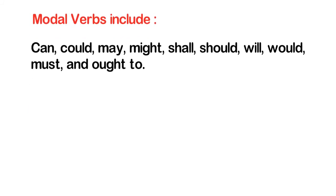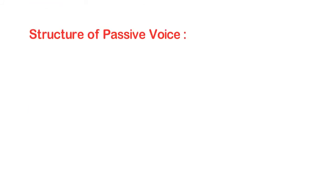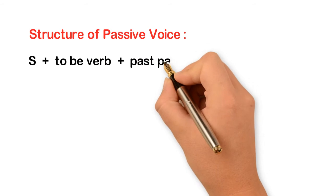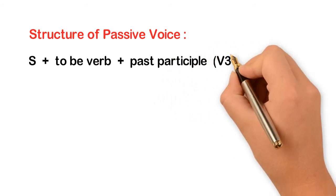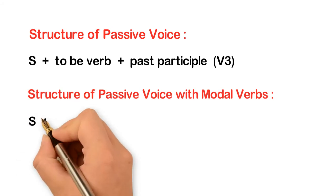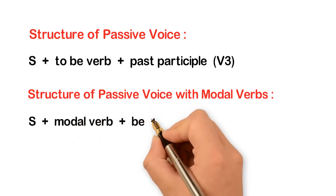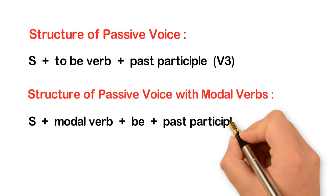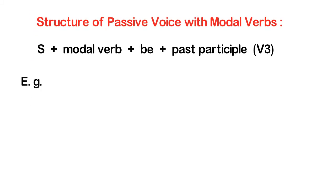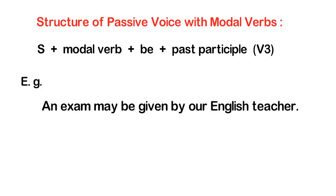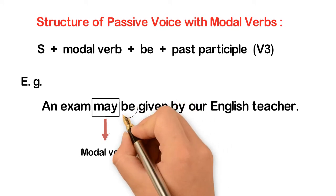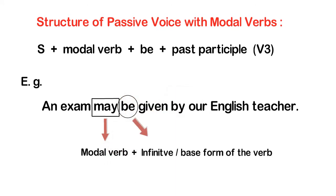As we learned in part one of the active and passive voice series, the structure for a passive sentence is: subject + be + past participle (third form of the verb). The structure of a passive sentence with a modal verb is: subject + modal verb + be + past participle. For example: 'An exam may be given by our English teacher.' Remember that a modal verb is followed by the infinitive or base form of the verb — we don't add 'to' or change the verb.